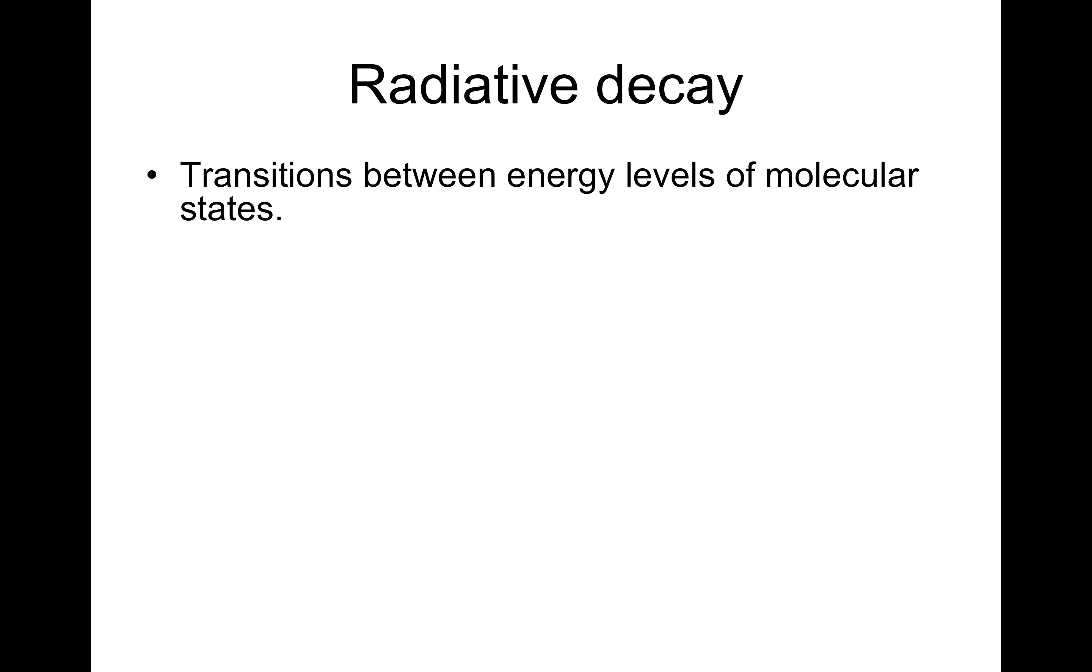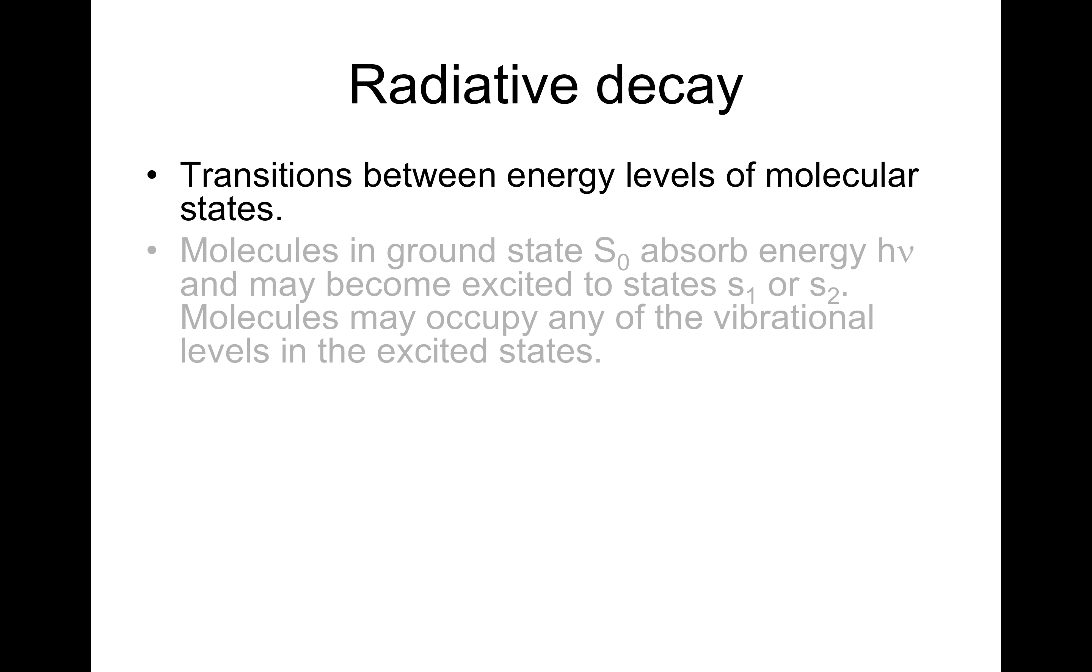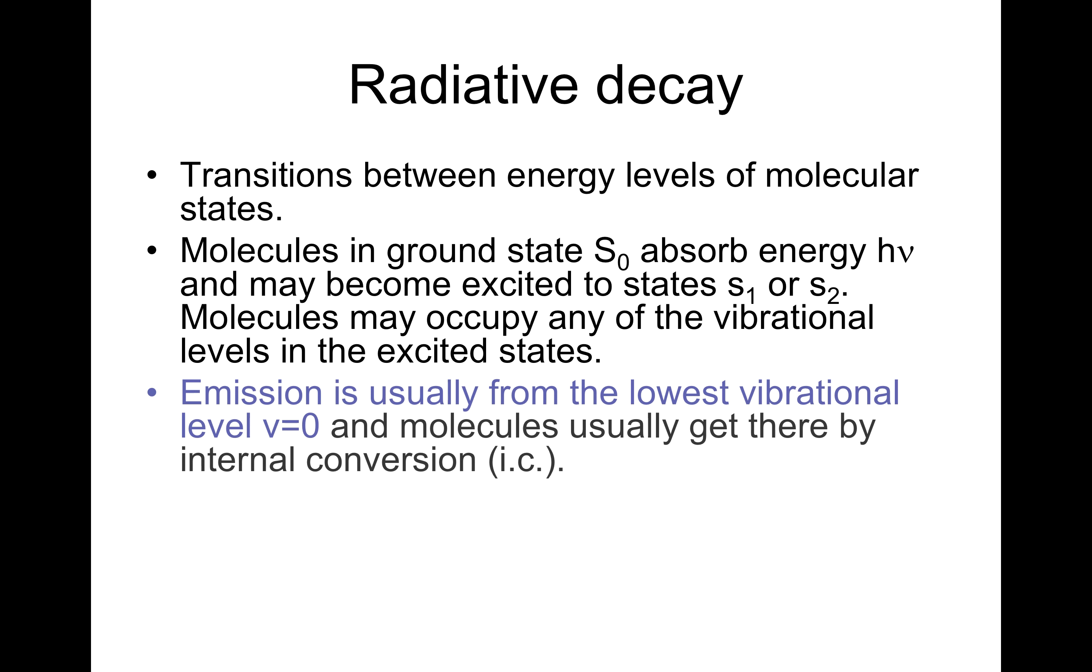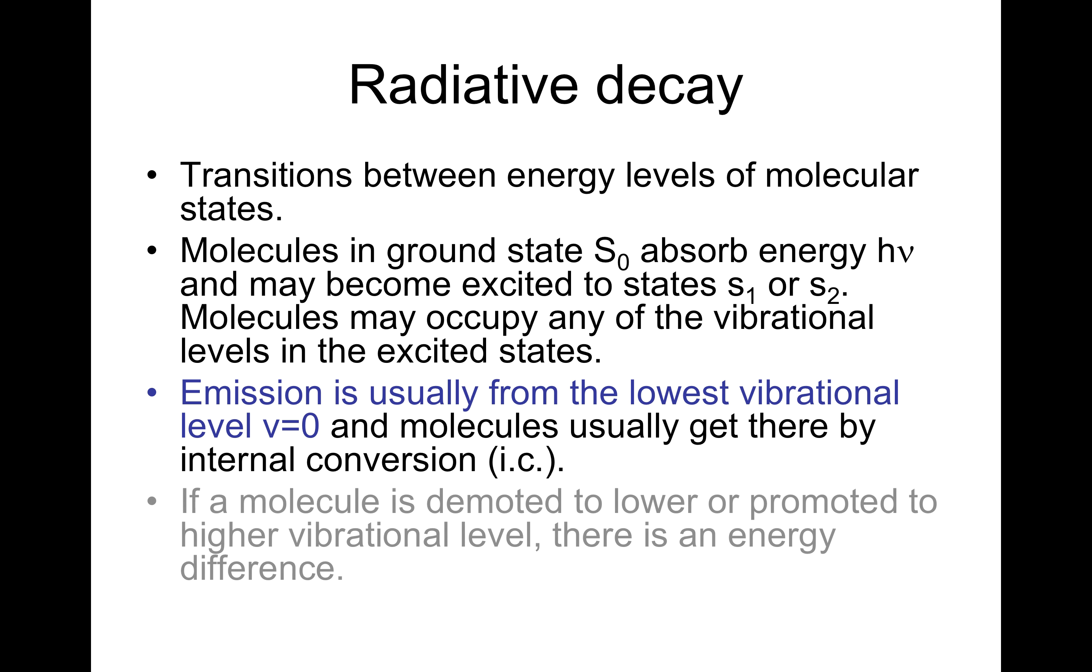Transitions between energy levels of molecular states. Molecules in the ground state S0 absorb energy and may become excited to states S1 or S2. As mentioned earlier, molecules may occupy any of the vibrational levels in the excited state. Emission is usually from the lowest vibrational level, V equals 0, and molecules usually get there by internal conversion, IC. If a molecule is demoted to lower or promoted to higher vibrational level, there is an energy difference.